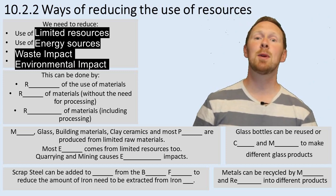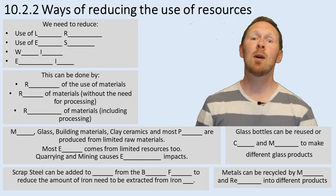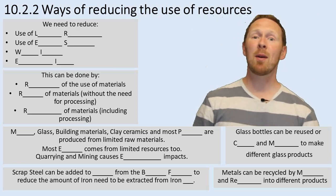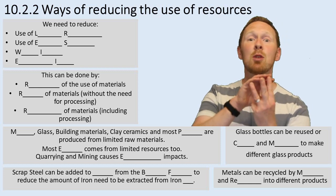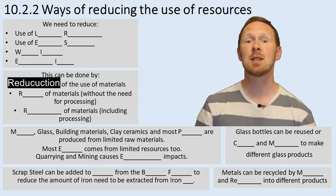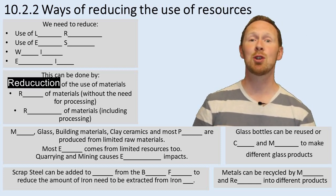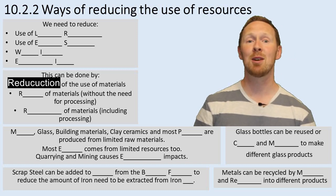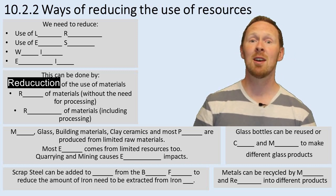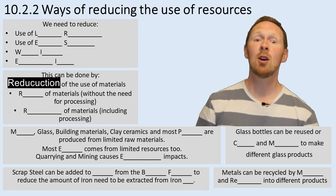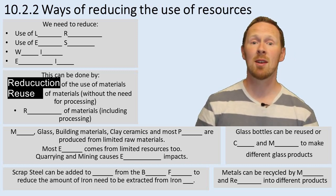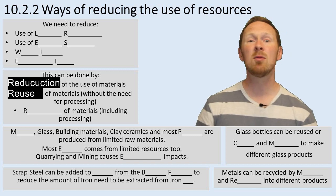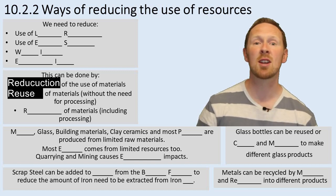So how can this be done? The three R's. We can reduce the amount of materials that we use — reduction in the amount of materials we use. Next, the reuse of materials, that is without processing costs.